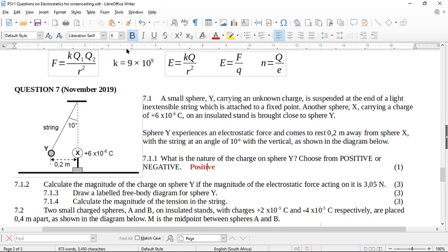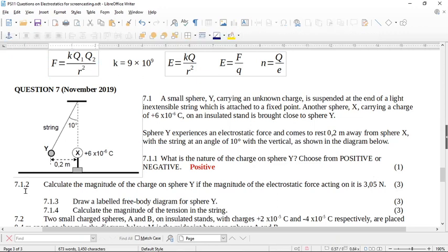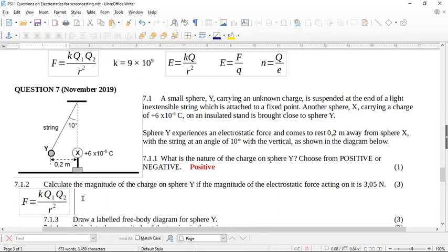Now it says to you calculate the magnitude of the charge on sphere Y if the magnitude of the electrostatic force acting is 3.05 newtons. So obviously here we're going to just use this formula here, F equals kQ1Q2 over r squared.